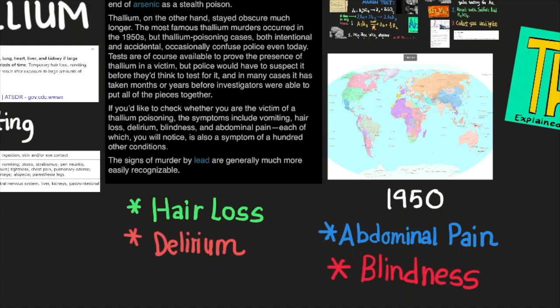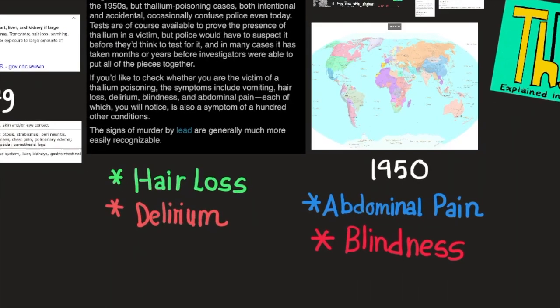occasionally confuse police even today. Tests are of course available to prove the presence of thallium in a victim, but police would have to suspect it before they think to test for it. And in many cases, it has taken months or years before investigators were able to put all the pieces together. If you'd like to check whether you are a victim of thallium poisoning, the symptoms include vomiting, hair loss, delirium, blindness, and abdominal pain,